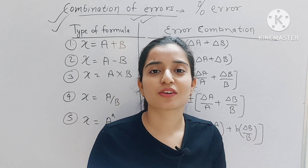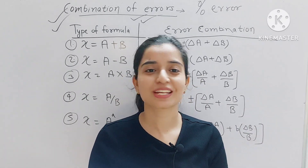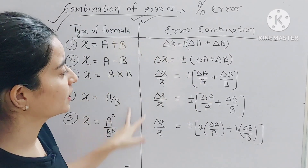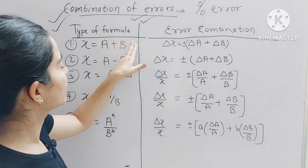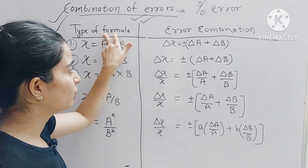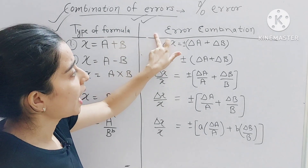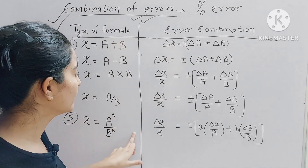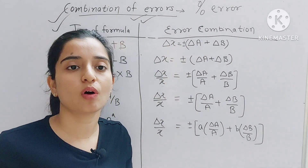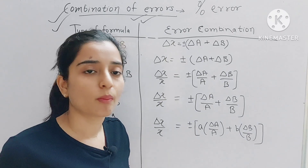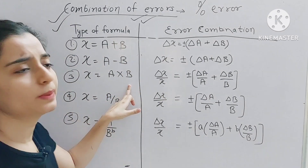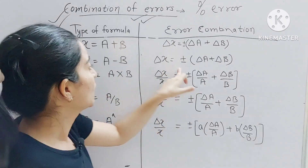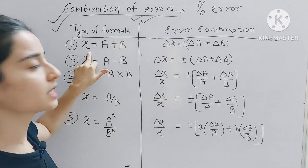We will study the concept, solve it, and then clear the concept. We have a table here with two columns. The first one is 'type of formula' and the second one is 'error combination.' This means that depending on which type of formula appears in the question — addition, subtraction, multiplication, or other forms — we apply the corresponding error formula.